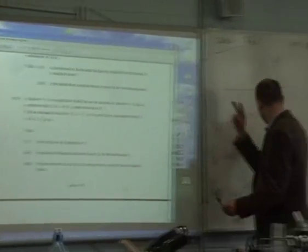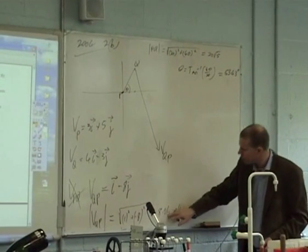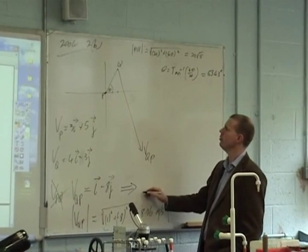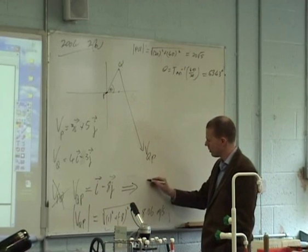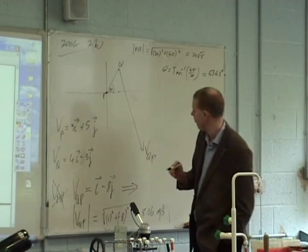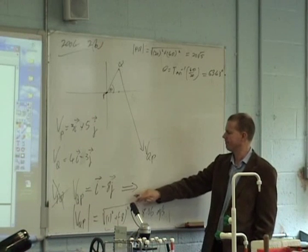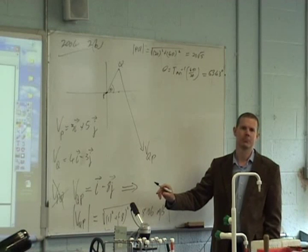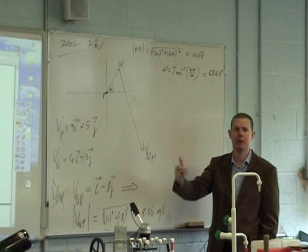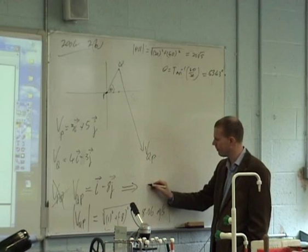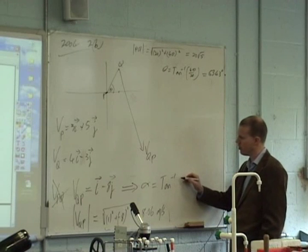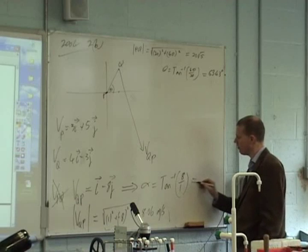We've already got theta used up, so we'll call this angle alpha. Alpha is the inverse tan of j over i, tan inverse of one, which gives 82.87 degrees. Now we've got to be careful - this is where this question gets tricky.